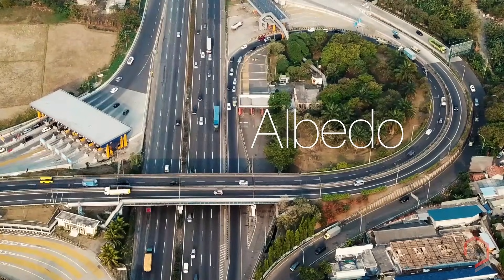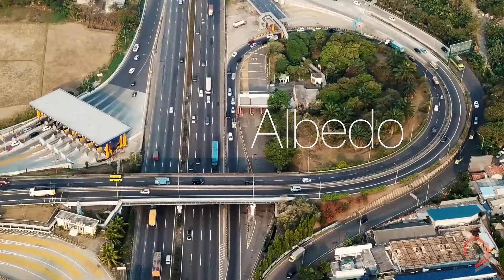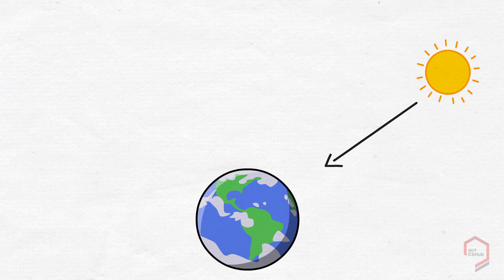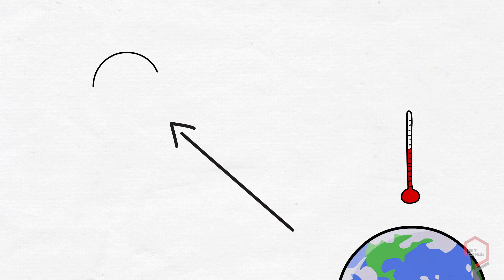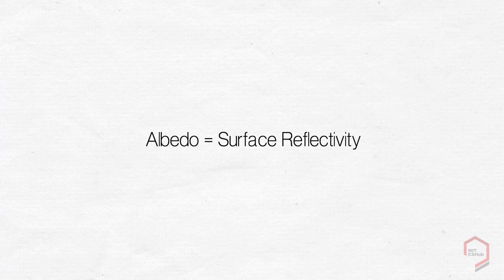We refer to it as albedo. Here's how it works. Solar radiation constantly enters the atmosphere, where it is either absorbed or reflected by the Earth's surface. While the energy that is absorbed stays and warms the Earth, the reflected energy travels back to the atmosphere, some of which is returned to space. Albedo is a measure of this reflected radiation.